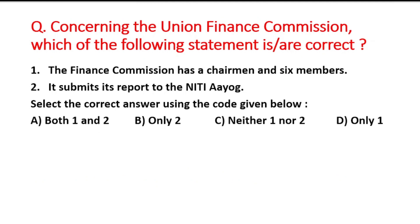Question: Concerning the Union Finance Commission, which statements are correct? Statement 1: The Finance Commission has a chairman and six members. Statement 2: It submits its report to the NITI Aayog. The right answer is option C — neither statement is correct. As covered earlier, the Finance Commission has 1 chairman and 4 other members (total 5), and the chairman submits the report to the President of India, not the NITI Aayog.